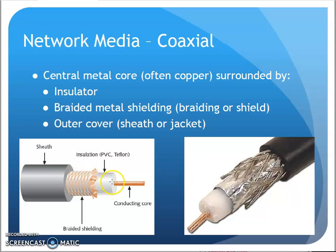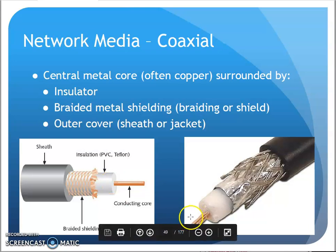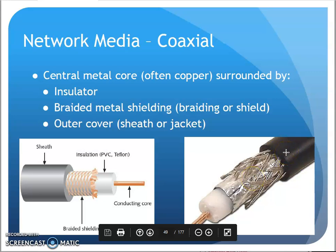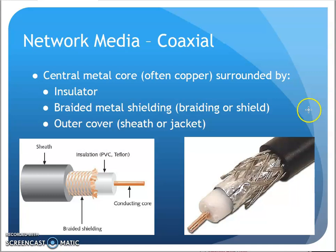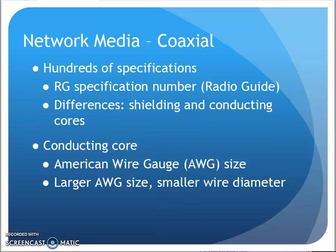So if I cut it apart, this is what I find. This is your actual conductor right here. This right here is an insulator — usually you can think of that as PVC plastic or Teflon. And then we usually have shielding around here. A lot of times it's foil or braided shielding. And then we have the jacket, the protective sheath or jacket around the cabling. That's typically what coaxial cable looks like.